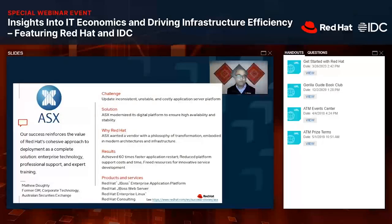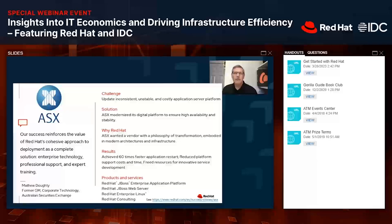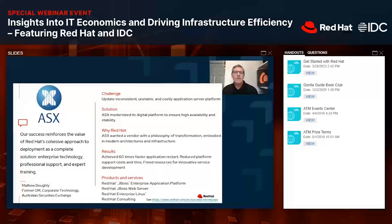ASX analyzed and tested several platforms for stability, performance, flexibility, cost-effectiveness, and availability of enterprise-level support. It chose the combination of best-of-breed JBoss Enterprise Application Platform middleware and RHEL, Red Hat Enterprise Linux, to deliver applications faster anywhere. ASX worked with Red Hat to build, test, launch, and deploy many critical business-to-business and public-facing applications. With its new platform, ASX gained greater stability and 60 times faster application restart speeds.